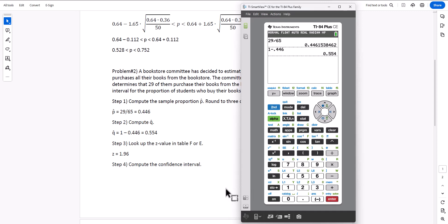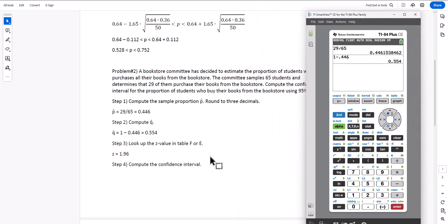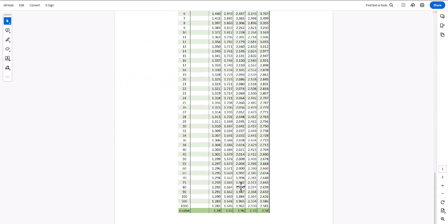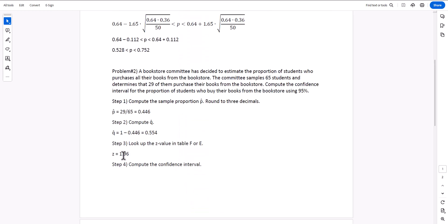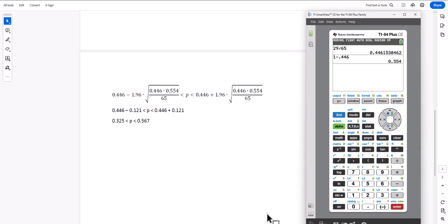We look up the z-value in table F. We go to 95%, go all the way down, 1.96 is the z-value. We're now ready to perform the computations.